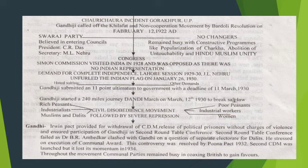Now look at how the Civil Disobedience Movement was launched. Mahatma Gandhi submitted an 11-point ultimatum to the government with a deadline of 11 March 1930. As the government had a salt law, Gandhi started a 240-mile journey on March 12, 1930 to break the salt law. Lord Irwin did not reply by 11 March, so on 12 March 1930 Mahatma Gandhi's journey started from Sabarmati — this is called the Dandi March. There were 78 trusted volunteers with him.